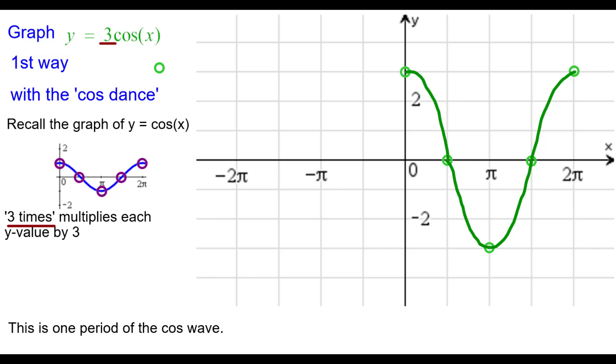This is one period of the cosine wave. Let's duplicate the wave in the negative direction. We'll start at 0,3 and go back a period 2 pi to negative 2 pi comma 3. Pi over 2,0 will go back to negative 3 pi over 2,0 back 2 pi that period. Pi negative 3 goes back to negative pi comma negative 3 and then negative pi over 2 comma 0.